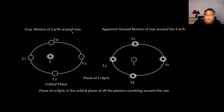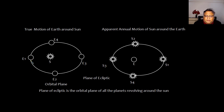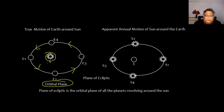Let us talk about the true motion of the earth around the sun. Imagine this is the sun at one of the foci and this is the earth's orbit around the sun. For simplicity, we consider four positions: e1, e2, e3 and e4, with the sun at one of the foci. This is going to be the orbital plane.